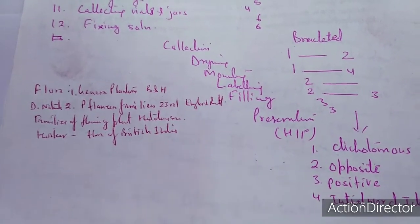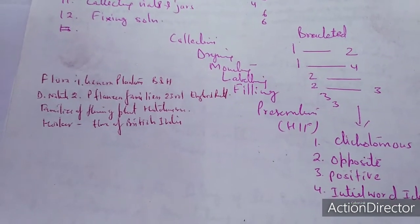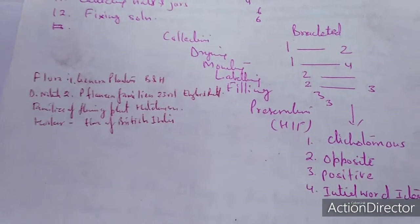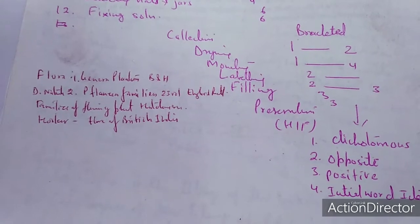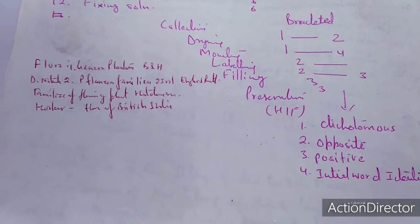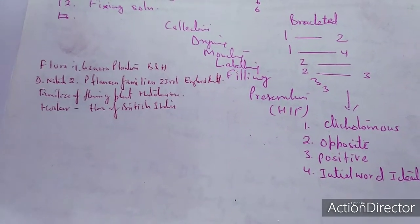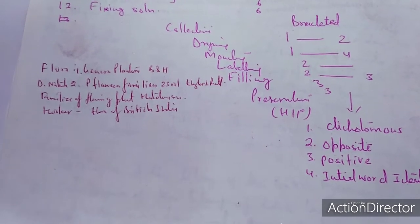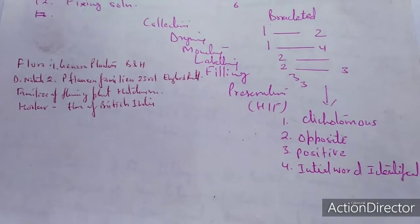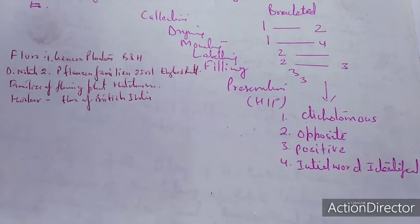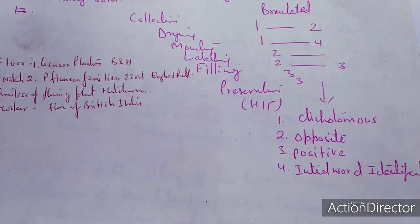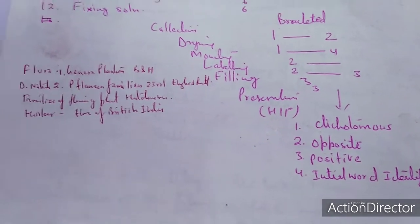Two types of keys can be prepared. When forming a key, dichotomous characters are used, opposite characters are taken, and one should be positive. The positive must be the important one; if you go negative you cannot proceed with identification. The initial couplet word should be identical.